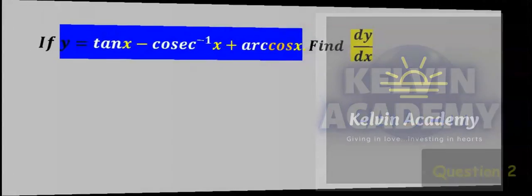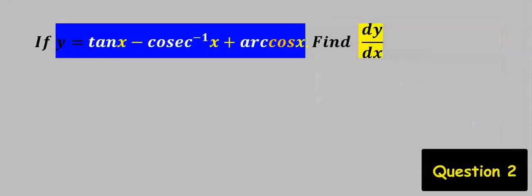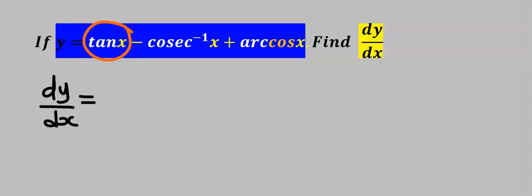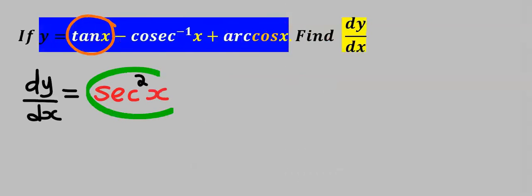Next, let's find the derivative of this function — let's differentiate tan x. From the basic derivative table, when you differentiate tan x you get sec squared x. Hence, sec squared x becomes the derivative of tan x.